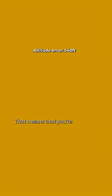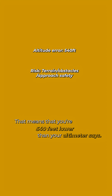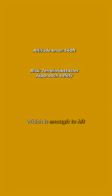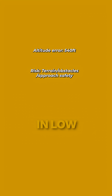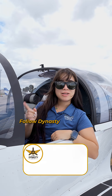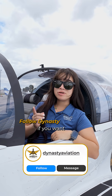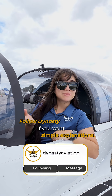Number four: understand the risk. That means you're 540 feet lower than your altimeter said, which is enough to hit mountains, terrain, or obstacles in low visibility. Follow Dynasty if you want simple explanations.